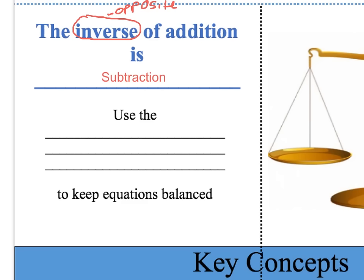Whenever we're solving equations, the overall goal is to isolate your variable, or get your variable by itself. In order to do that, we need to use the subtraction property of equality to balance equations.